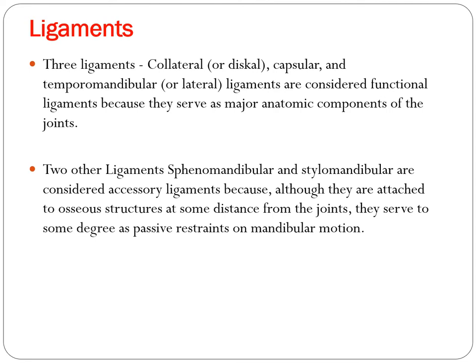There are five ligaments associated with the TMJ. Three are collateral, capsular, and temporomandibular ligaments — considered functional ligaments as they are major anatomic components of the joint. The other two — the sphenomandibular and stylomandibular ligaments — are accessory ligaments attached to distant structures that provide passive restraint on mandibular motions.